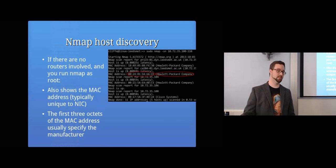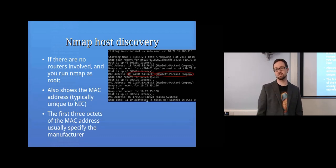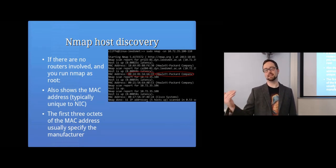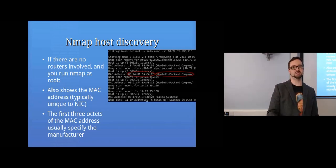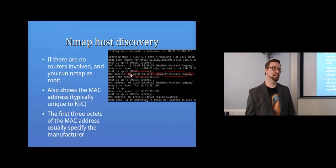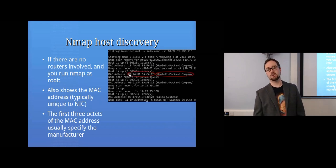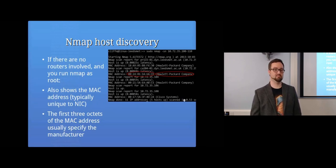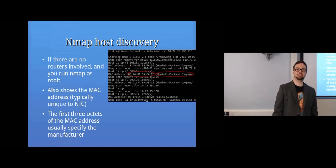If there are no routers between you and the computers you're scanning, and you're running nmap as root, nmap will also show MAC addresses. The first three octets of a MAC address tell you the manufacturer — though it could be spoofed. In this example you can see an HP system, a Cisco device (probably a router or switch), and a VMware entry indicating a virtual machine.